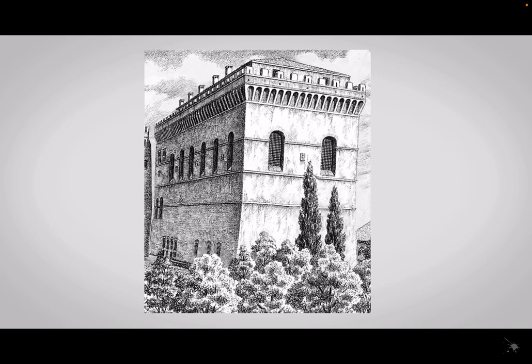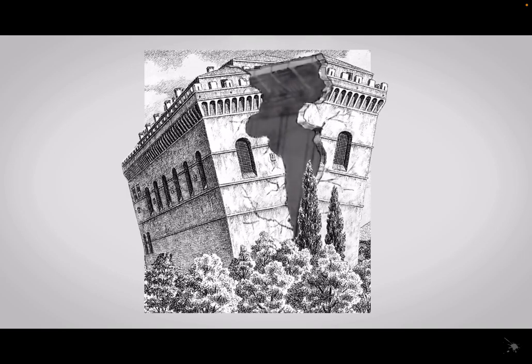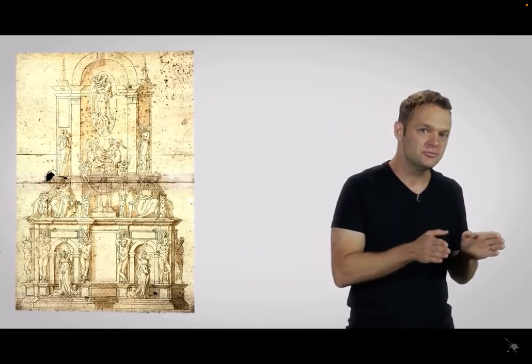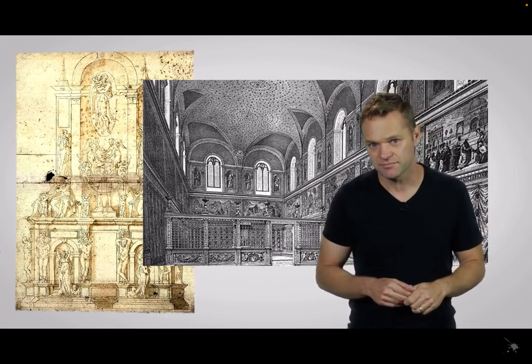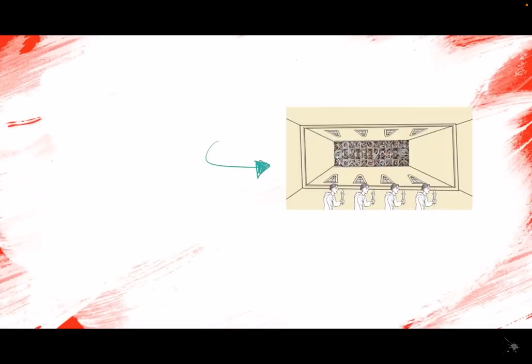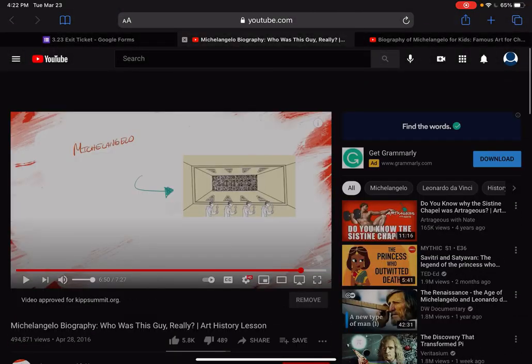Not even 21 years after construction, cracks started to appear in the vault. To stop this from getting worse, in 1504 they placed huge iron rods underneath the floor. Now the ceiling and walls had to be repaired. After the Pope pressured Michelangelo, he told him he could only work on the tomb if he painted the Sistine Chapel. He reluctantly agrees. So he's going to paint the ceiling.